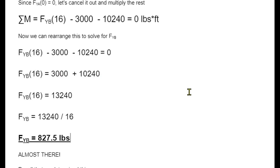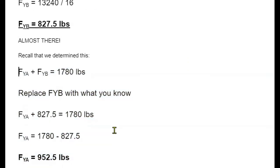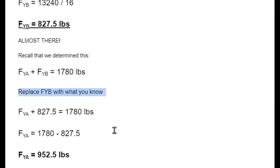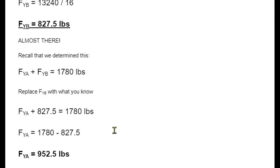Now we have one more thing to find. Earlier we learned that the sum of the reaction forces equals 1,780 pounds. We're going to replace the FYB with the number we just found. Then we rearrange this with a little bit of algebra to solve for FYA. If you take this and subtract it from both sides, and then do this subtraction here, you get that FYA is 952.5 pounds.